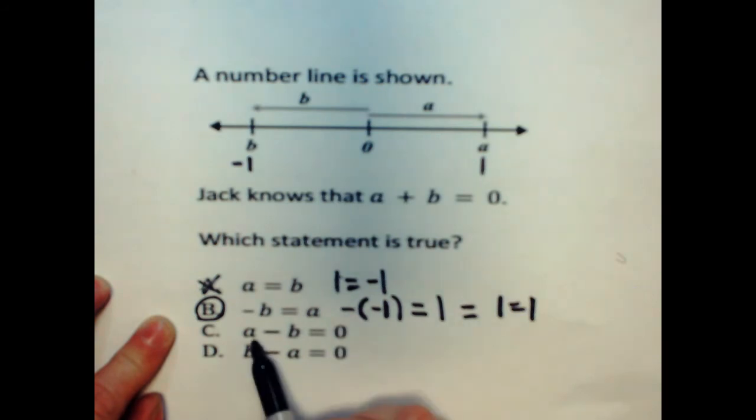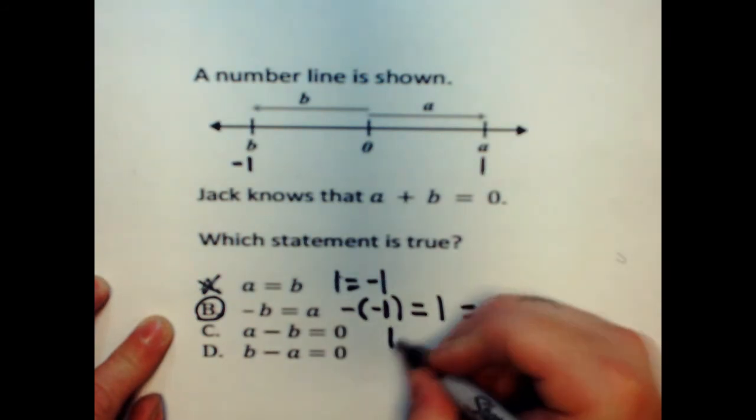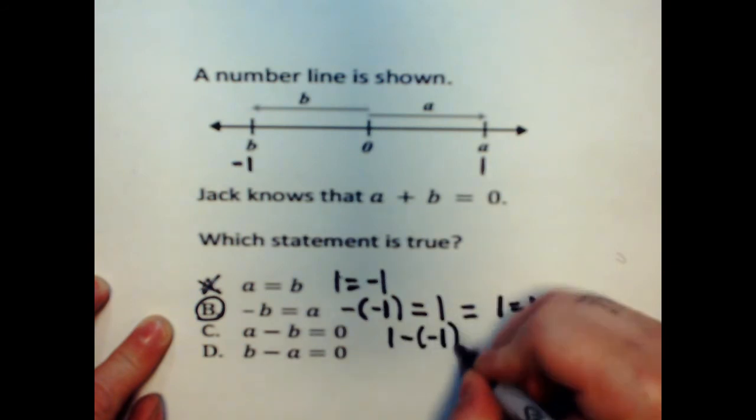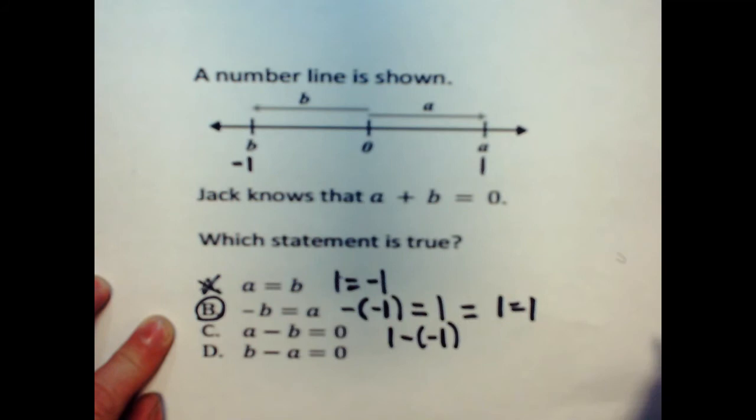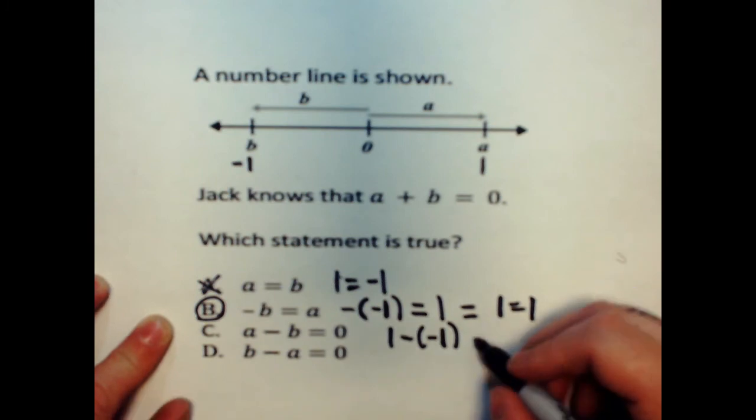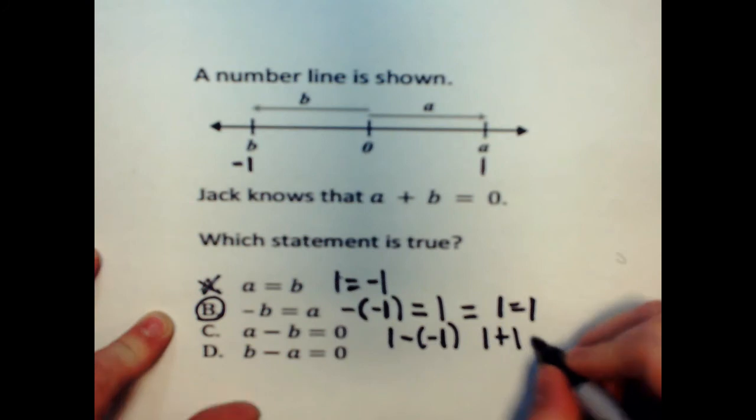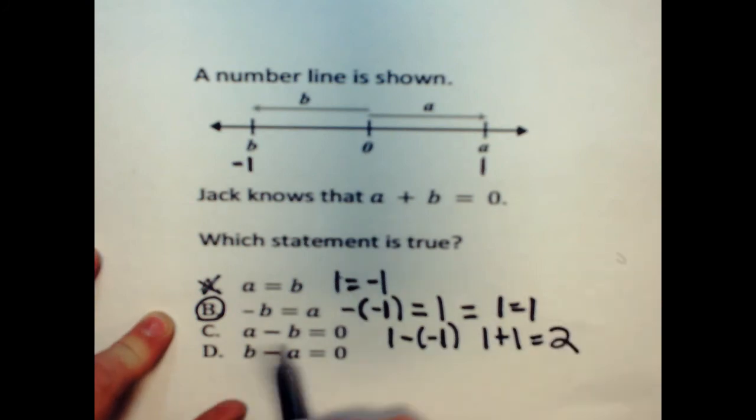I can try the same thing for this. I can say one minus a negative one. One minus a negative one. And I know if I'm going in the negative direction, and I'm going to subtract another one, I'm going to turn around. So, one minus one is the same thing as saying, or one minus a negative one is the same thing as saying one plus one. And that equals two. So, that doesn't equal zero. So, that can't be correct either.